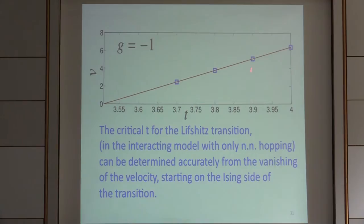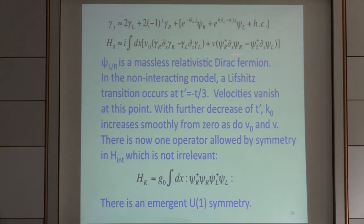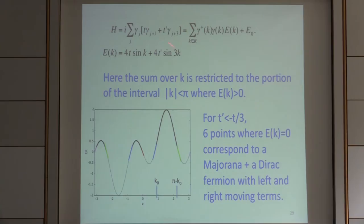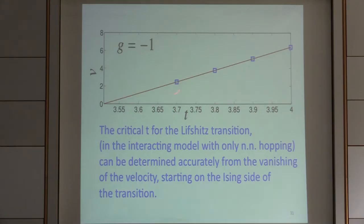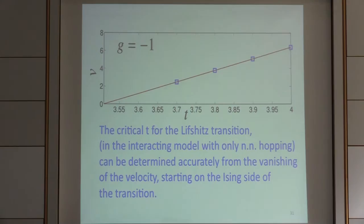We can check this conjecture: in the non-interacting part we have velocity V0 for the Majoranas and V for the Diracs. As we vary T-prime, we go through a critical point where extra zeros appear in the dispersion relation and the velocity vanishes. Numerically, for G equals minus 1, there's a critical T where the velocity vanishes. This is the transition point from the Ising phase into the Ising plus Luttinger liquid phase, occurring at a relatively small coupling G/T of about one-third, in stark contrast to the attractive case where the transition was at coupling about 250 — an enormous asymmetry between positive and negative coupling.